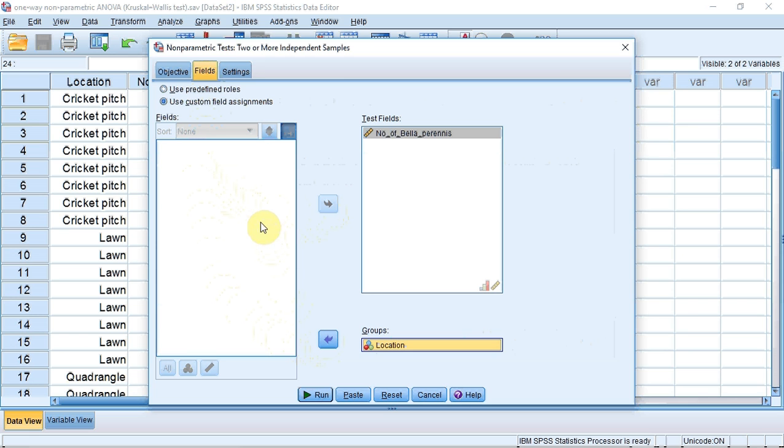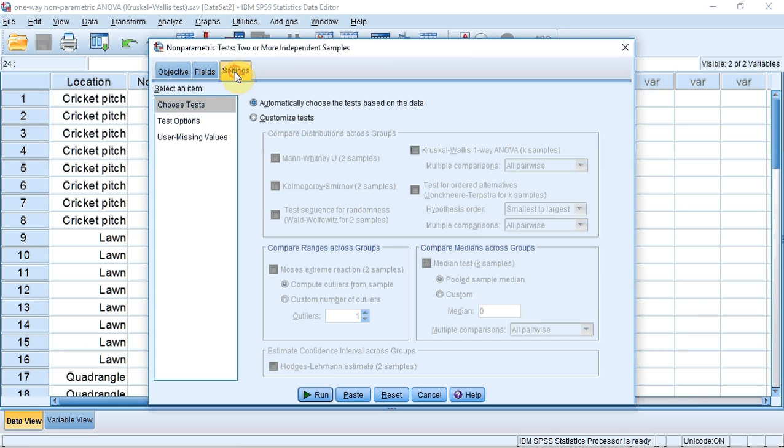I'm now going to go back up to Settings to tell it which test I want to use. I click the Settings tab. I click the Customise Test radio button. You can see it has several tests, including the Kruskal-Wallis one-way ANOVA. I'm going to tick the box. It also allows me to select how I want to compare the data afterwards using the Post-Hoc test. I'm going to leave it as All Pairwise. I'm now going to go down to Run, and an analysis window will open.